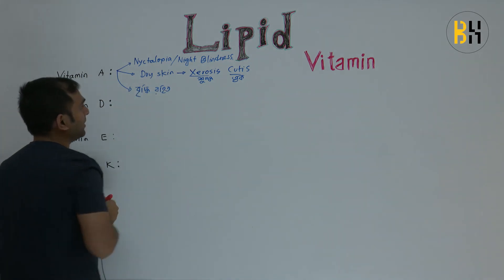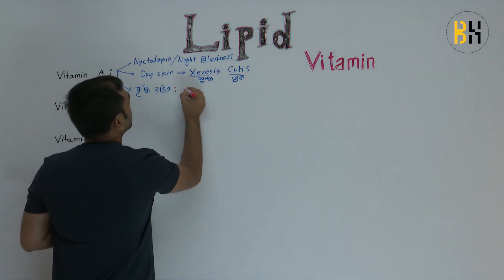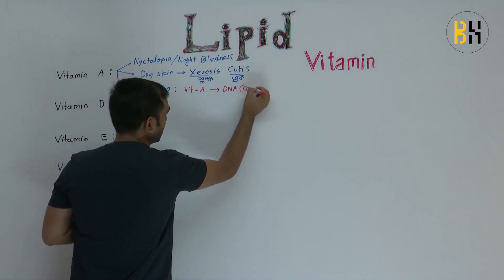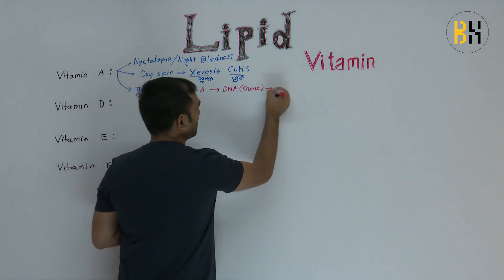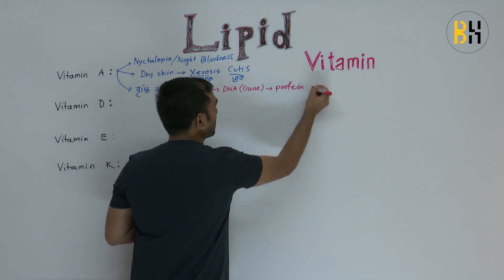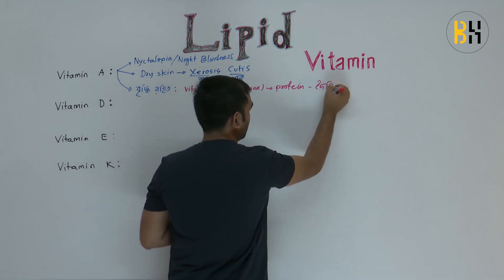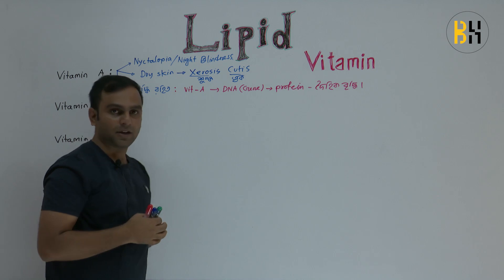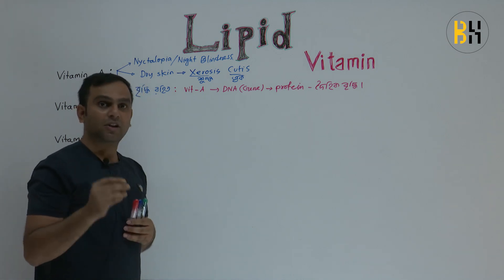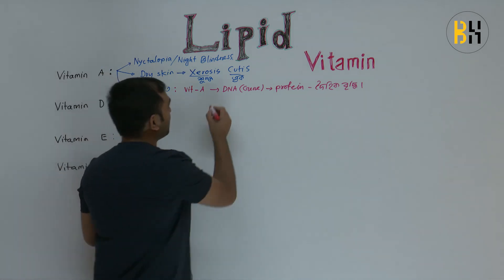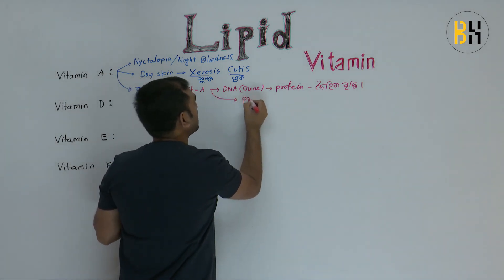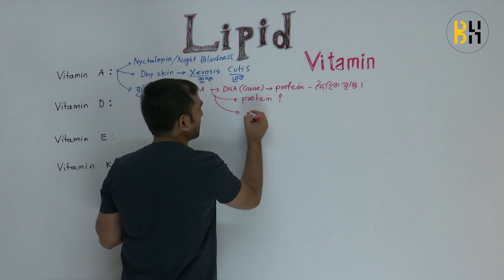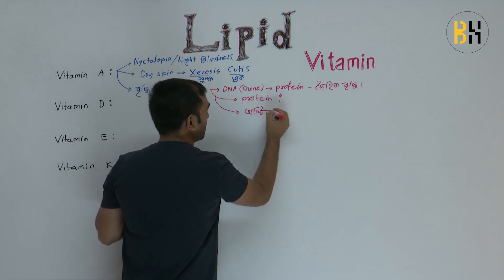Who is given vitamin A? Usually it takes DNA to form, which involves protein. Vitamin A protein is related to osteocytes, which is called osteocytes.